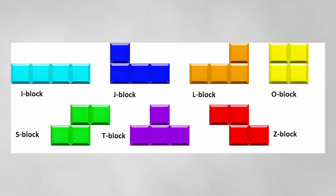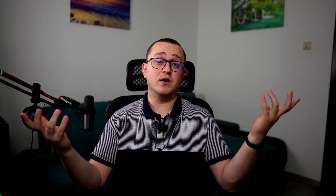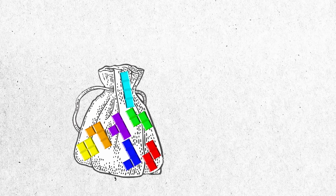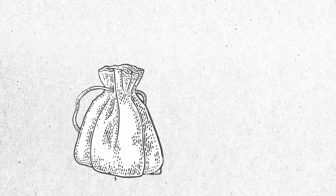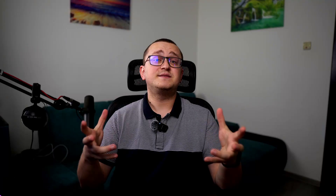In classic Tetris, there are seven different tetrominoes, each with a unique shape. If the pieces were chosen entirely at random, you might end up with long runs of the same piece, making the game frustrating and less enjoyable. The bag system works by placing one of each of the seven pieces into a virtual bag. The game then draws from this bag without replacement, meaning each piece is only drawn once until the bag is empty and refilled with another set of seven pieces. This method prevents streaks of the same piece and ensures a balanced distribution, making the game smoother and more enjoyable. This clever use of a mathematical concept keeps the player engaged and coming back for more.